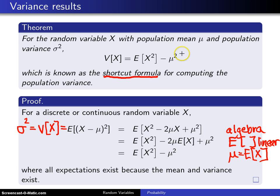and that proves the result because you are assuming that all expectations exist because the mean and the variance exist. The assumption here is the population mean μ and the population variance σ² exists, so all of these moments will exist as well.